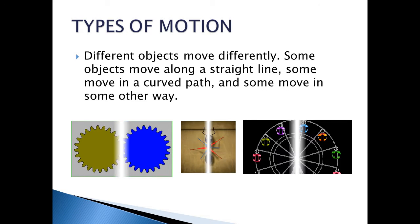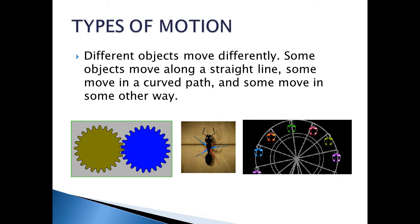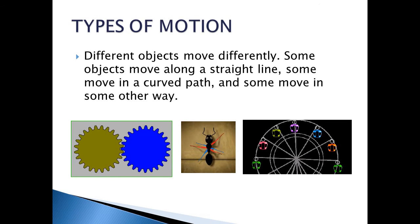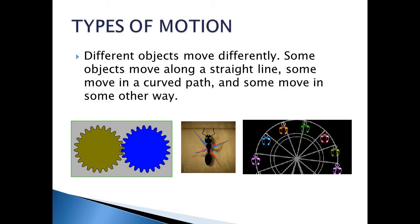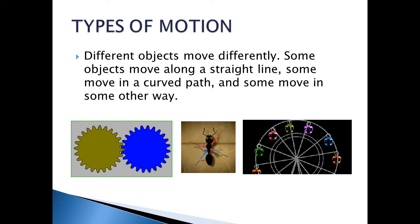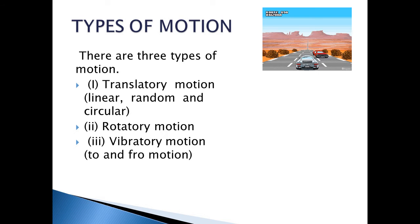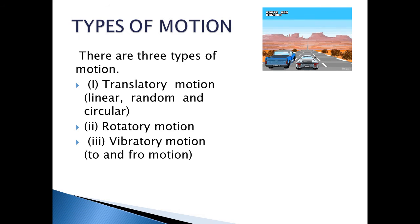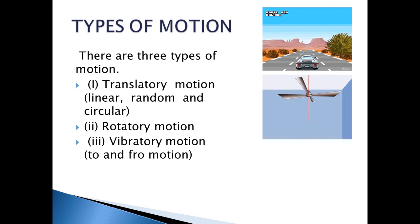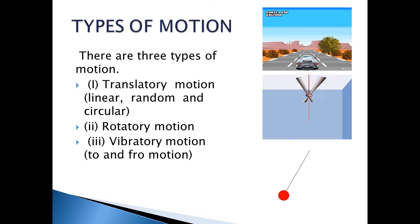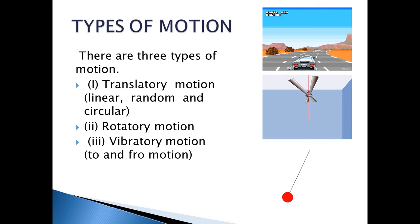Types of motion: different objects move differently. Some objects move along straight lines, some move in curved paths, and some move in other ways. There are three types of motion: translatory motion, which includes linear, random, and circular; rotatory motion; and vibratory motion.